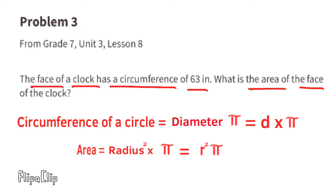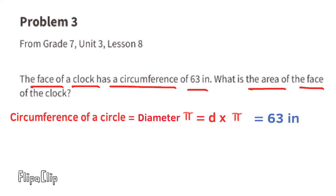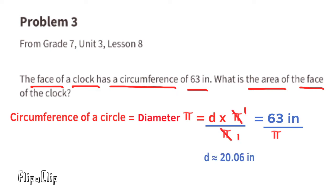We know that the circumference is 63 inches, so the diameter times pi equals 63 inches. Dividing both sides by pi to isolate the diameter, the diameter equals 63 divided by pi, or approximately 20.06 inches.